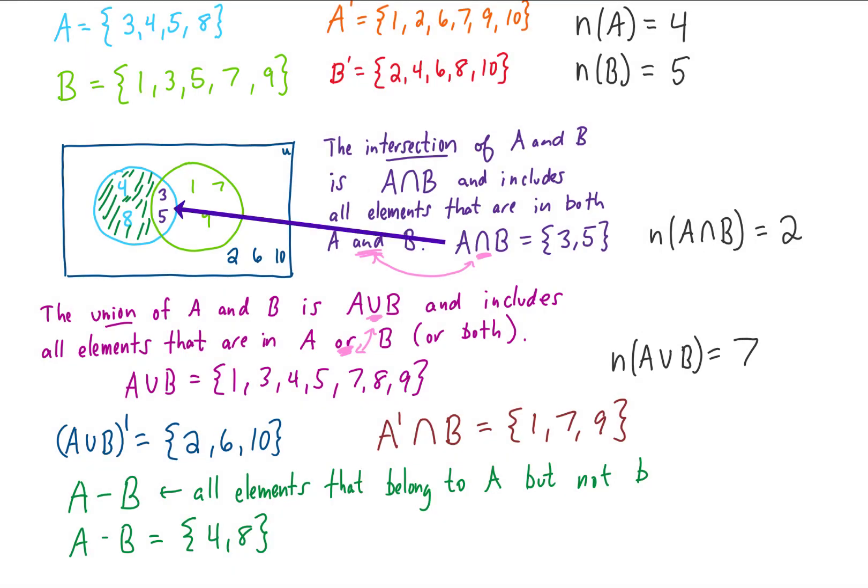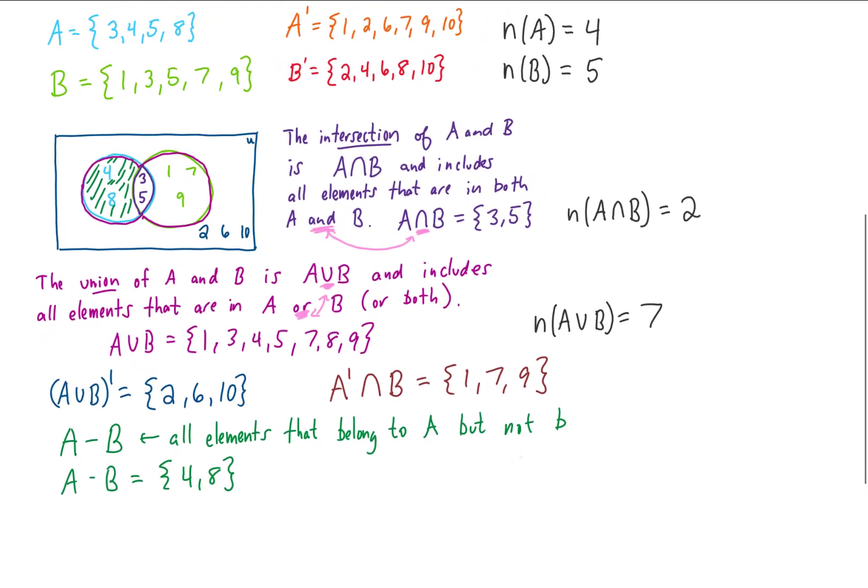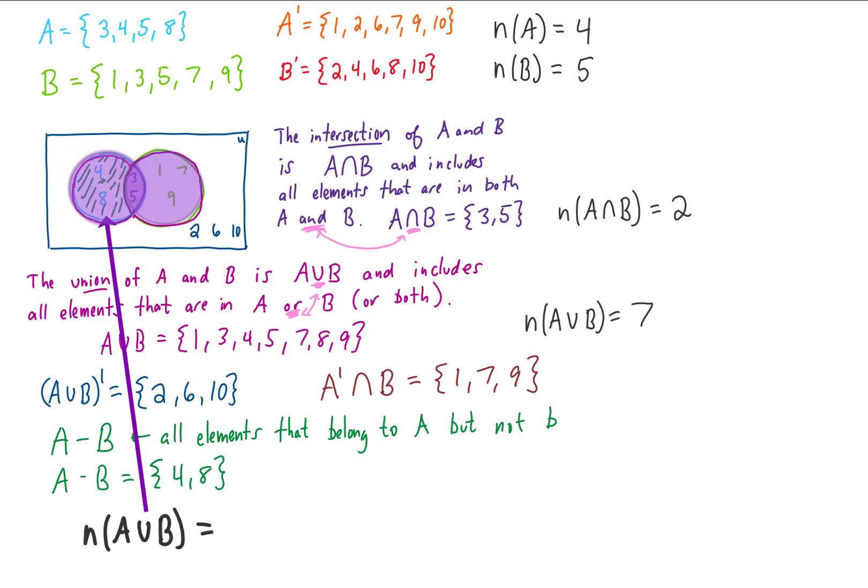Now if we look at this Venn diagram, the intersection of A and B is in this little area right here. The union of A and B can be given by all of the elements in this whole region right here. So this formula is going to look a little bit complicated, but it's probably not too surprising that the number of elements in A unioned with B, that's the number of elements in this region up here, should be the number of elements in A plus the number of elements in B.